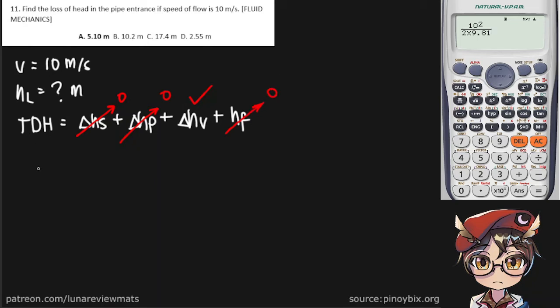So now we're only really concerned about the velocity head which is given to us. If you remember, h sub v equals v squared over 2g.